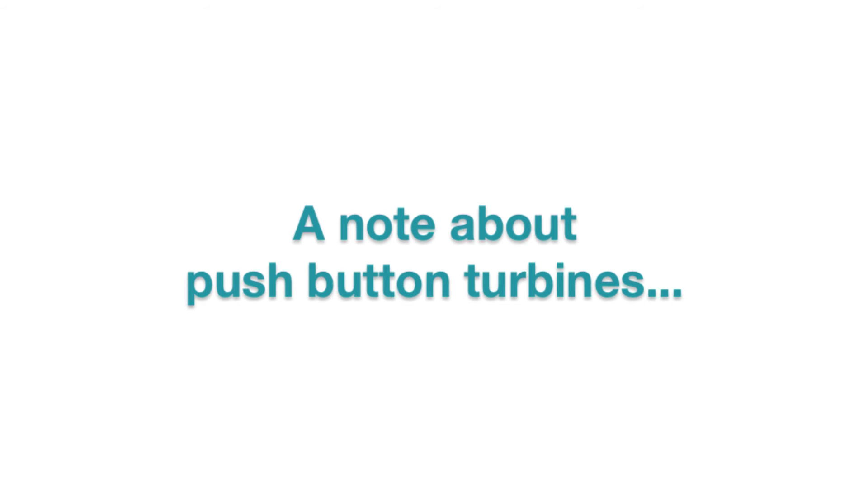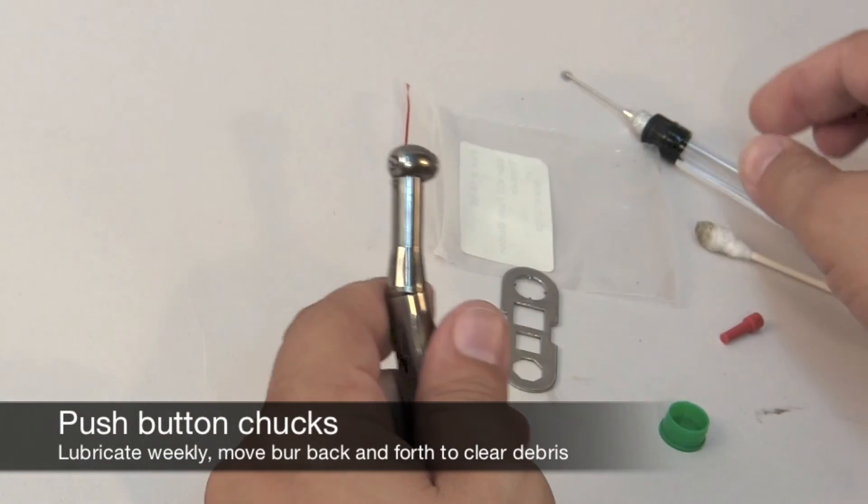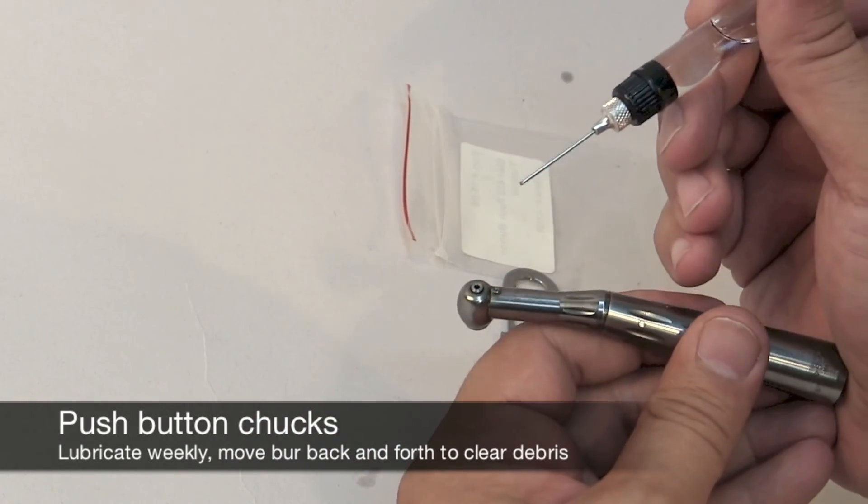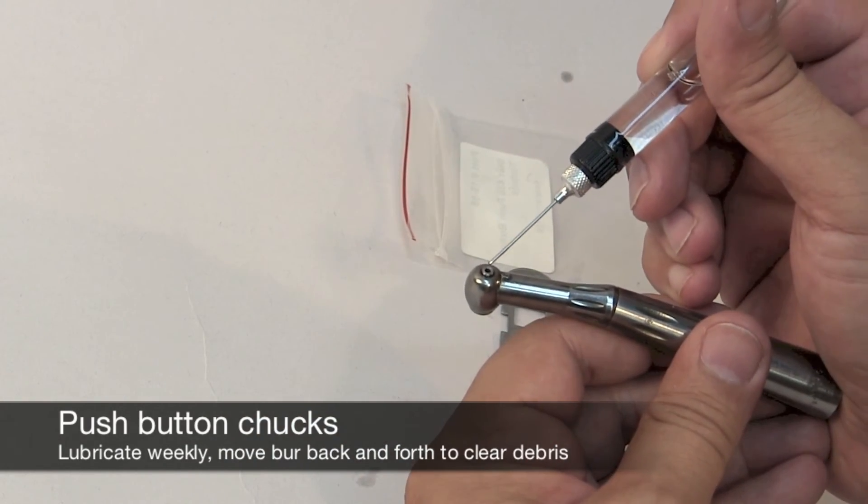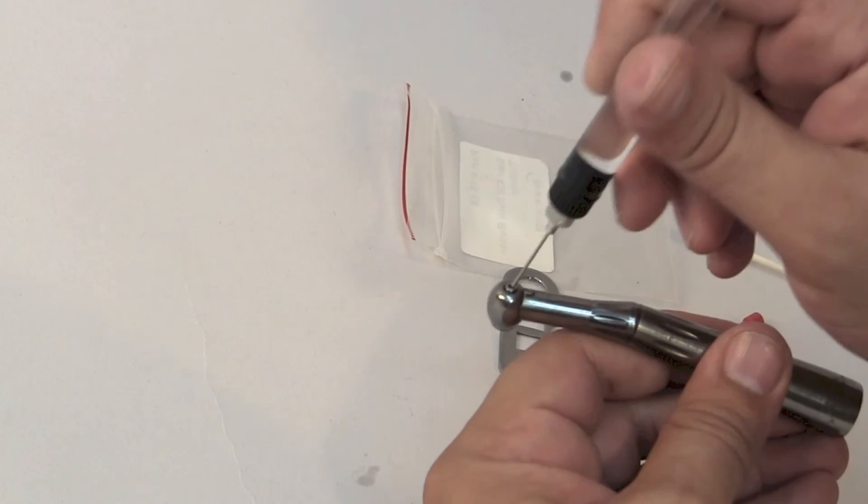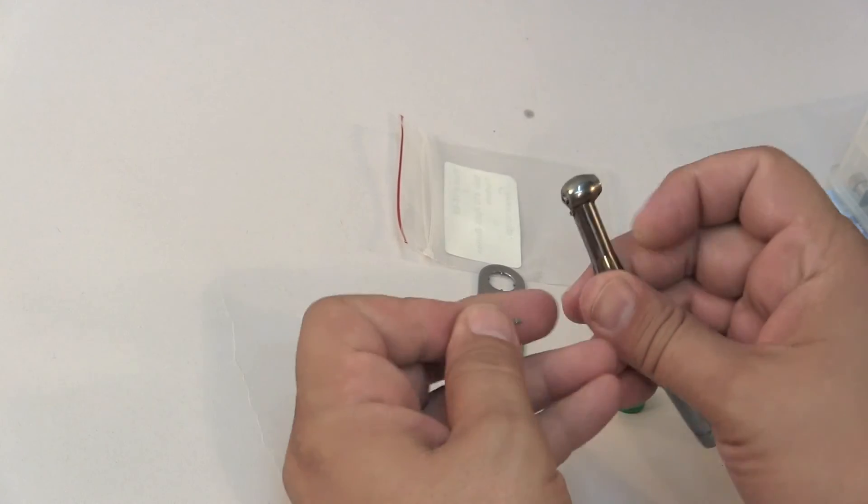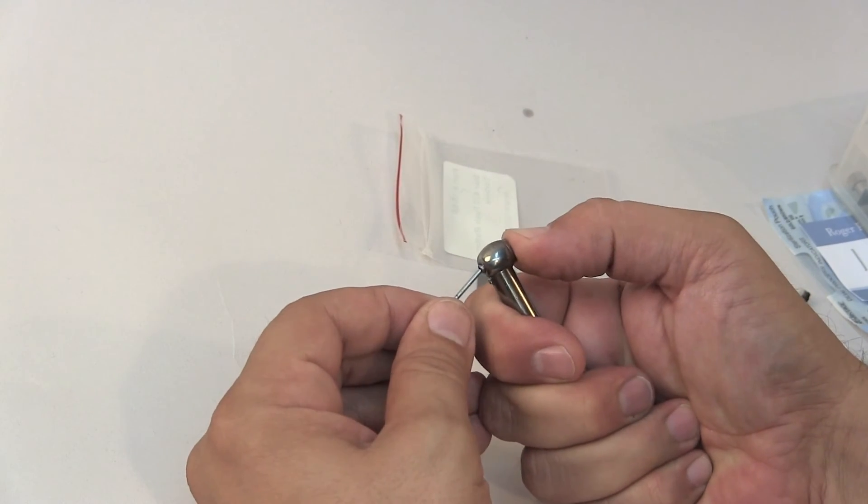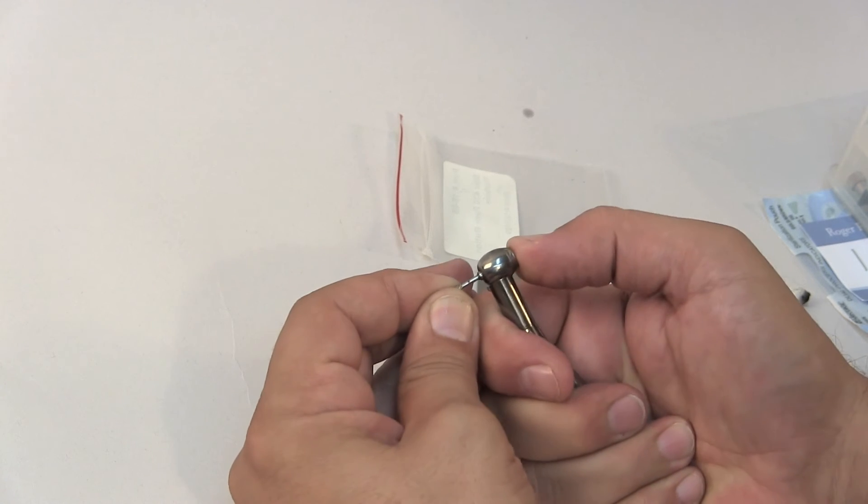A common complaint with push-button turbines is that sometimes the chuck will not hold the burr. This is often caused by debris in the chuck and not a chuck failure. We recommend weekly lubricating the chuck by placing a few drops of lubricant into the burr end of the turbine, and then inserting a burr and gently moving it back and forth with the chuck opened. This will flush the chuck and will usually correct the problem.